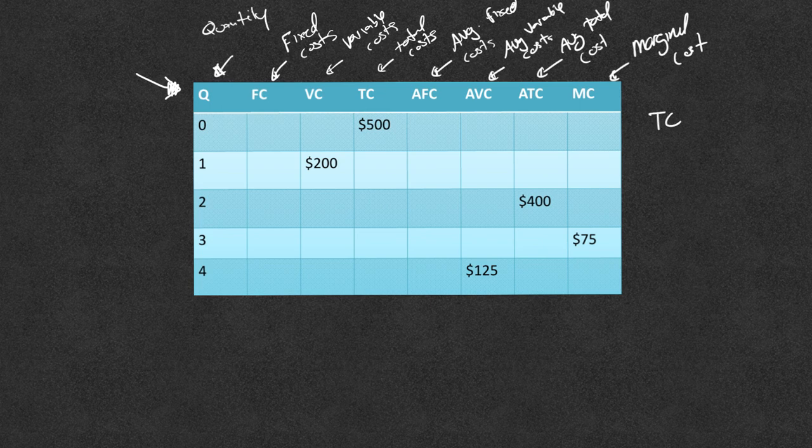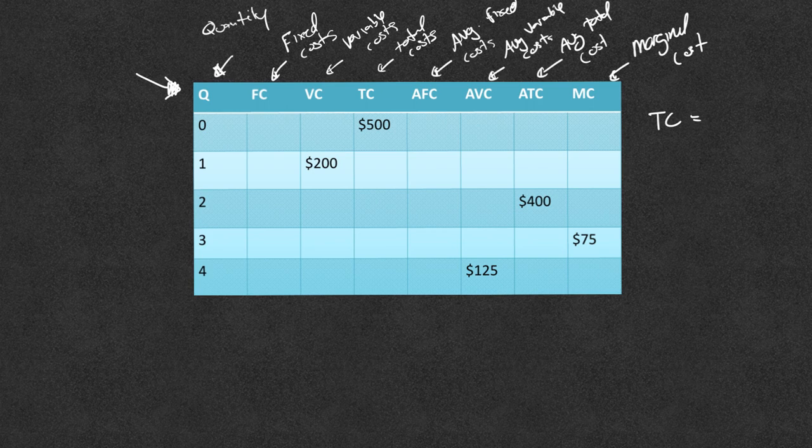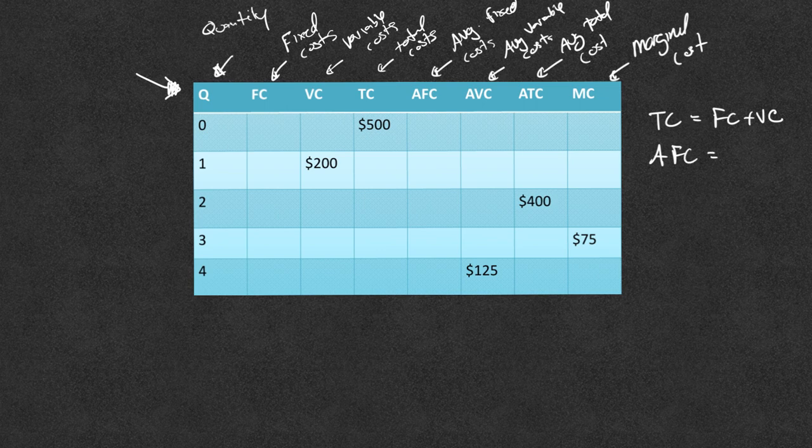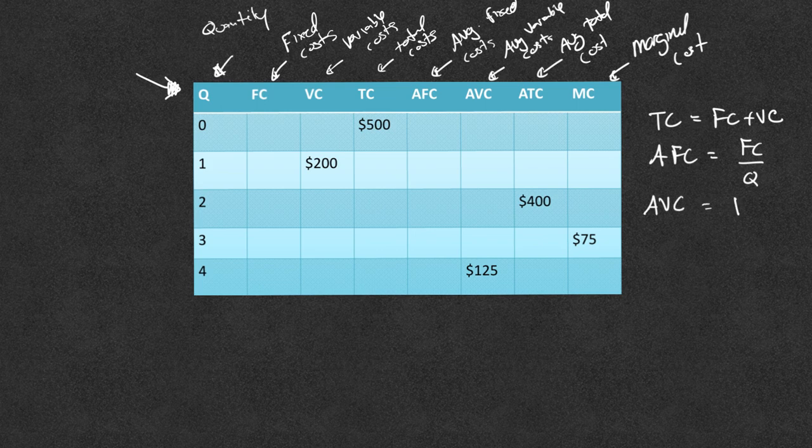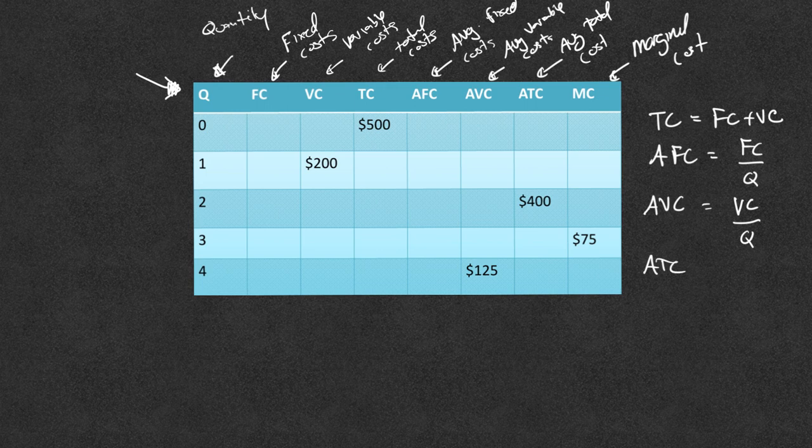We'll start with total cost. Total cost is going to be your fixed cost plus your variable costs. Your average fixed cost is just going to be your fixed cost divided by the quantity. Your average variable cost is going to be your variable cost divided by the quantity. Your average total cost is going to be your total cost divided by your quantity.